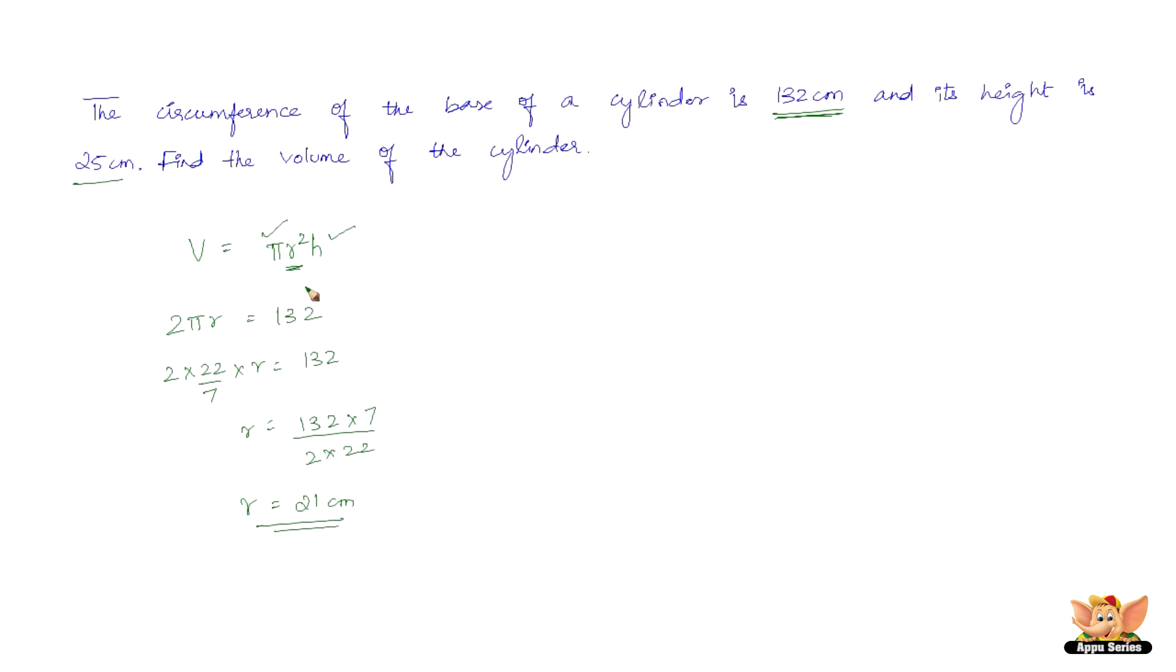All we need to do is substitute in this formula and find the volume. So volume equals 22/7 into r² that is 21 into 21 into h which is 25. So simplifying this we have 7 goes 3 times into 21 and then multiplying the rest we have 34,650 cm³. Therefore the volume of the given cylinder is 34,650 cm³. This completes the problem.